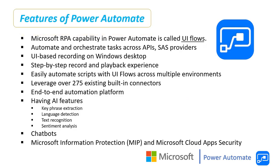Now we can see what are the features of Power Automate. Microsoft added robotic process automation — that is RPA features — to Power Automate and launched Power Virtual Agents. Microsoft's RPA capability in Power Automate is called UI Flows. We will discuss about UI Flows in the later part of the session.